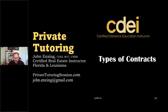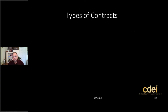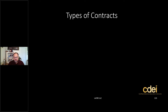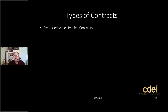Let's look at types of contracts. When we talk about types of contracts, we're not really talking about different types like real estate contracts and automobile contracts. What we're talking about in contract law are the different types of contracts all associated with real estate. The first one is expressed contracts versus implied contracts — very important to know the difference between the two for the state exam.